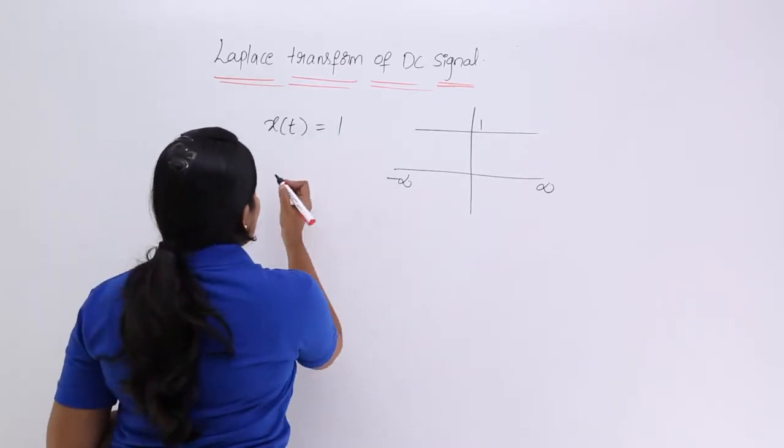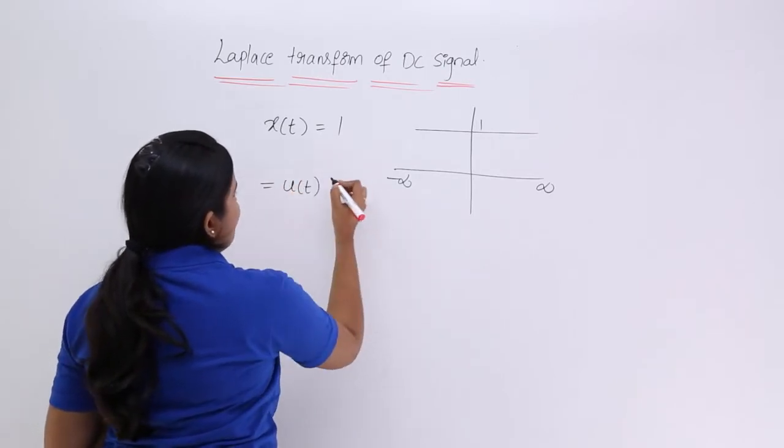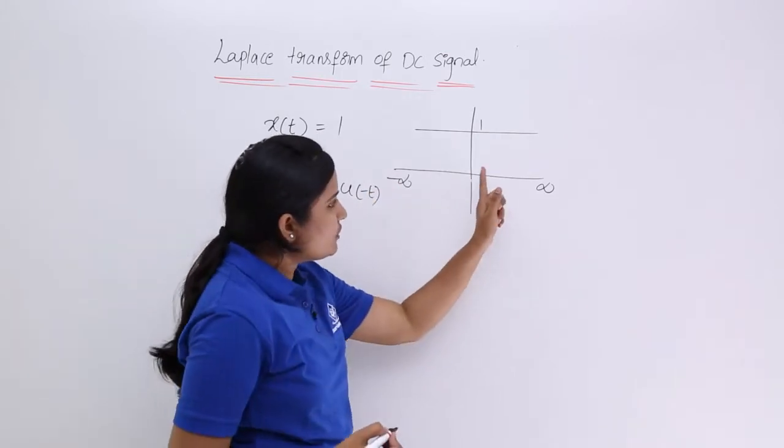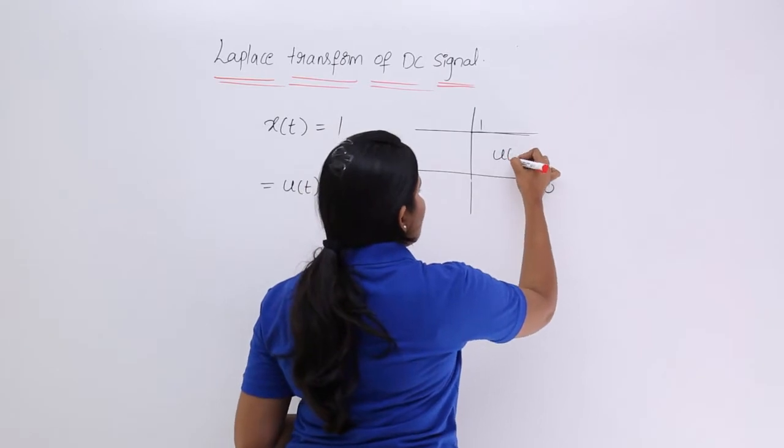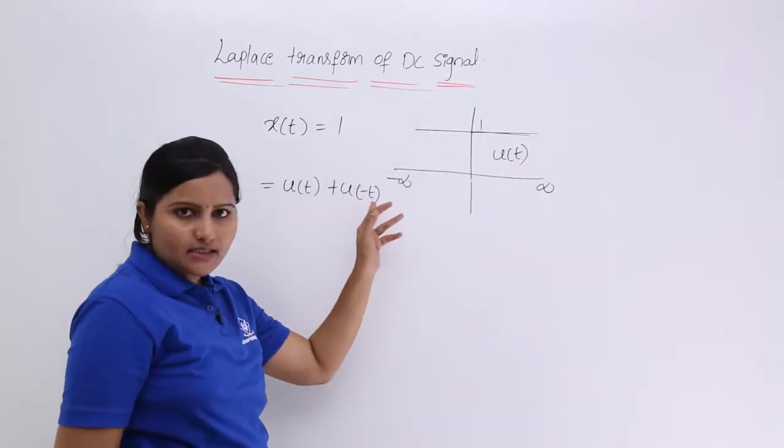So here for this one I want to write like this u of T plus u of minus T. Why? Because from 0 to infinity we can say this function is unit step function.